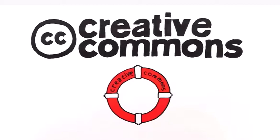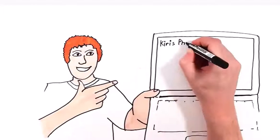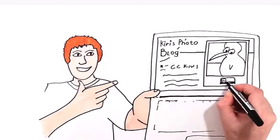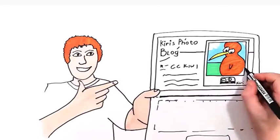Zach downloads a photo called CC Kiwi that he wants to use in his science project. He can do this without asking Kiri, the photographer, first — because she's already given permission with a Creative Commons license. Kiri's license is legally robust but easy for Zach to understand. She's told the world, including Zach, that they can use CC Kiwi as long as they acknowledge her as the original photographer.